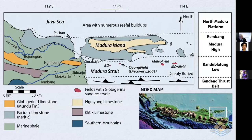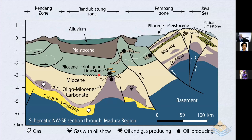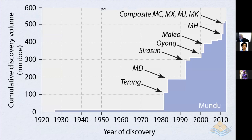Here's the general distribution of the play fairway, with outcropping globigerinid limestones on Java Island. To the south of Madura Island offshore, we have a range of fields — BD, Oyong, Malio, and MDA — characterized by these globigerinid sands, tending to form atop structural highs. The first globigerinid sand fields were developed in the early 1980s. Looking at cumulative discovery volume in millions of barrels of oil equivalent, we go from Terang, MD, Cirruson, Oyong, Malio through to a composite of fields in the early 2010–2013 period — these are not insubstantial reservoirs, measured in hundreds of millions of barrels of recoverable hydrocarbons.